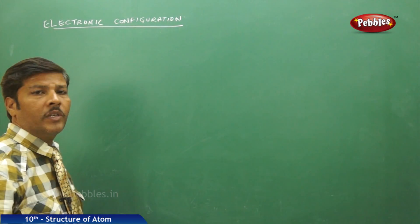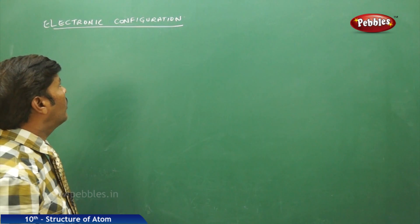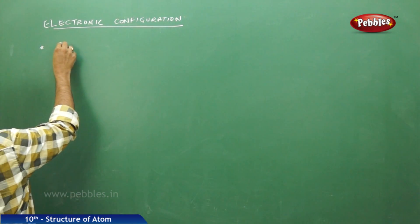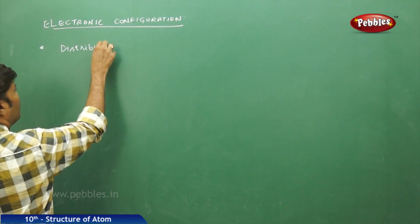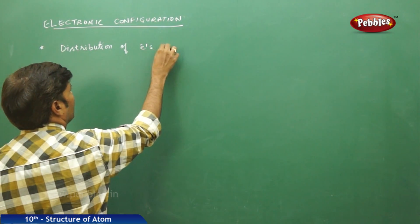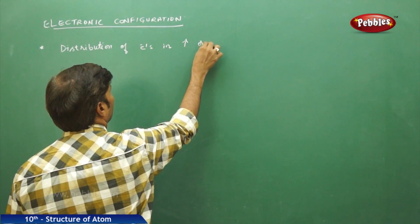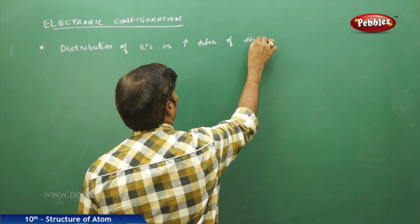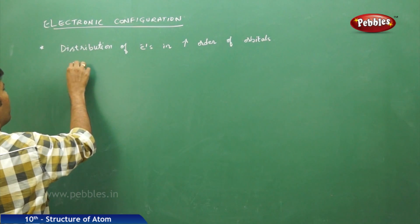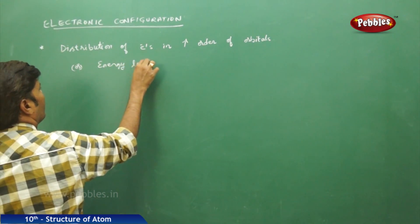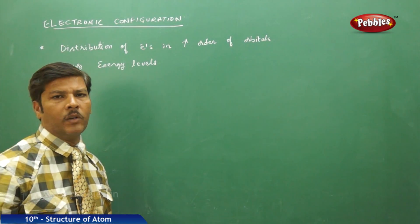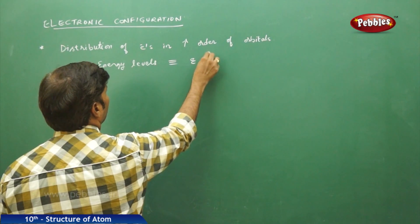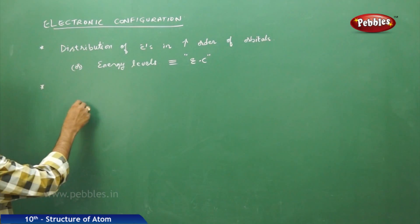We are going to continue with the next topic in the same chapter, that is atomic structure. The topic is electronic configuration. Electronic configuration means the distribution of electrons in increasing order of orbitals or energy levels.